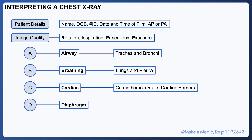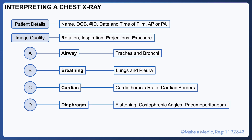The D stands for diaphragm. You want to have a look at the shape of it. It may be flattened in patients with COPD who have hyperinflated lungs, or you may notice that one hemidiaphragm looks raised compared to the other. You should have a look at the costophrenic angles to see whether they can be delineated. Pleural effusions can cause blunting of the costophrenic angles. It's important to look under the diaphragm for the presence of a rim of air, as an erect chest x-ray may sometimes be performed in patients presenting with an acute abdomen to check for pneumoperitoneum, which would be suggestive of a perforation.